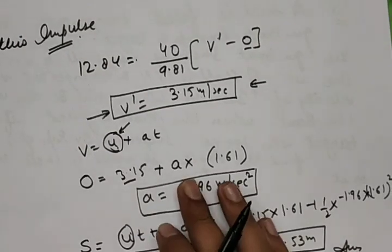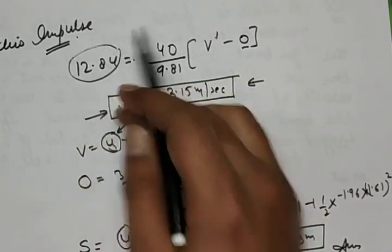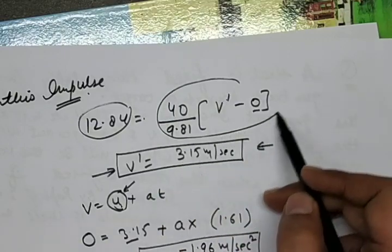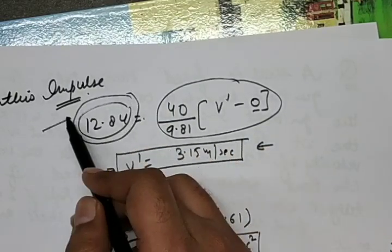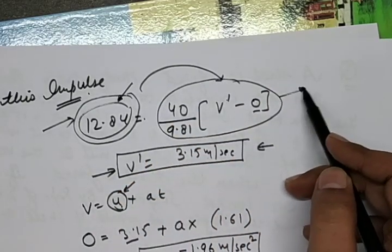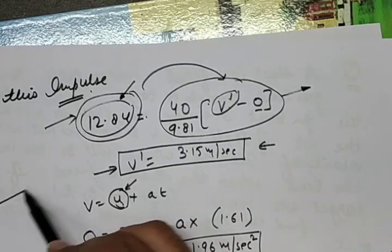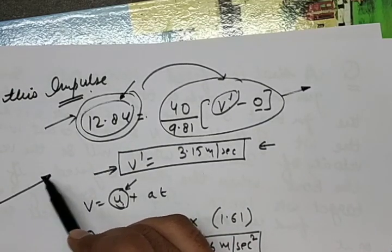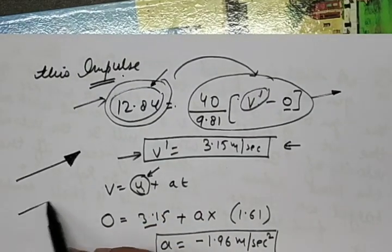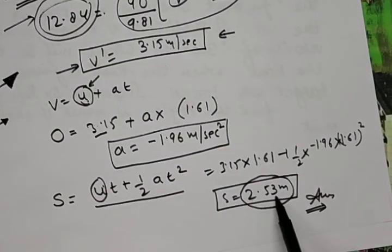So in this question, you apply the impulse-momentum principle. One important thing is that the impulse is transferred to the block as well, and the impulse magnitude remains the same. This impulse, calculated for the bullet, is applied to the block to find the velocity after penetration. The block will move forward 2.53 meters.